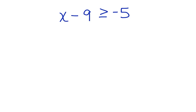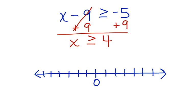Here's another one. X minus 9 is greater than or equal to negative 5. We use the inverse operation to get rid of the minus 9 by adding 9 to both sides. Bring down the X. These cancel. X is greater than or equal to 4. Now we can also graph this solution on a number line.